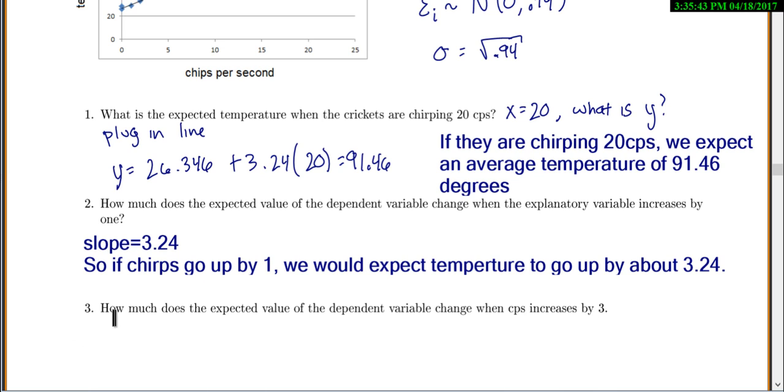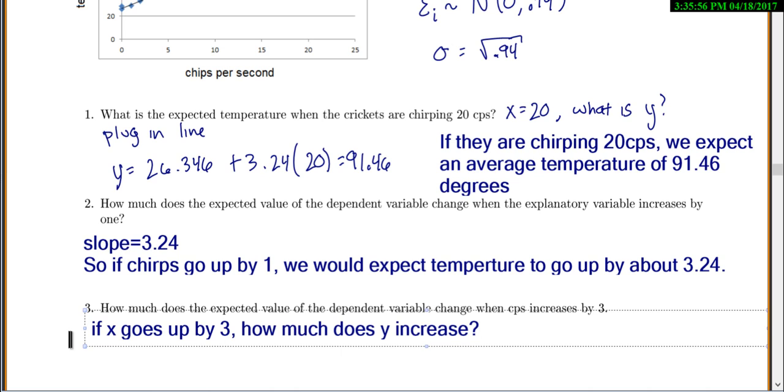Now with that in mind, it says how much does the expected value of the dependent variable change when the chirps per second increases by 3? So this is saying if x goes up by 3, how much does y increase? So to calculate that, we say well every time x goes up 1, y goes up 3.24 for my slope. So if x goes up 3, y should go up 3 times 3.24 or 9.72.